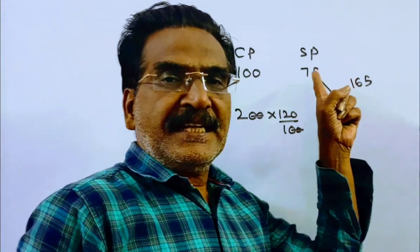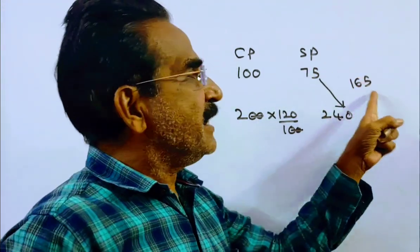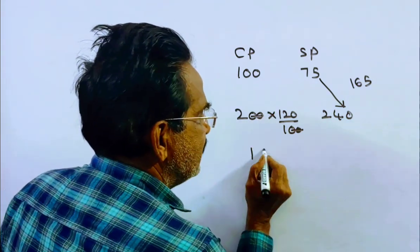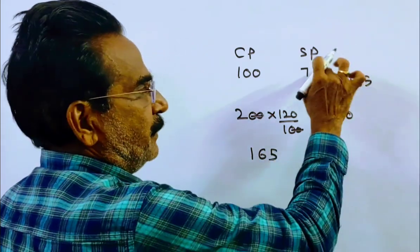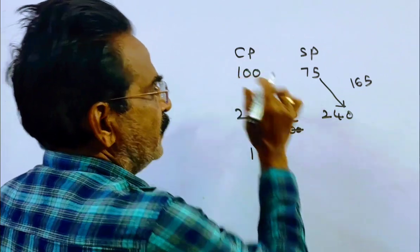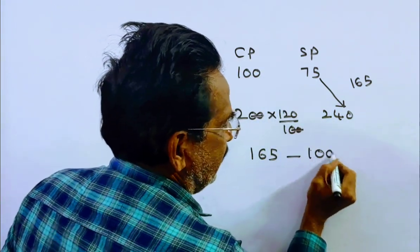So friends, if the selling price is increased by 165, the cost price is 100. But it is given in the problem.